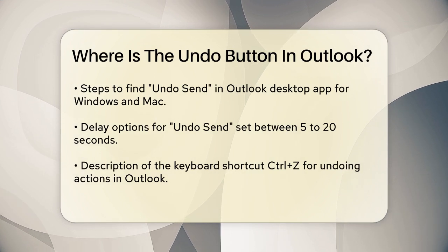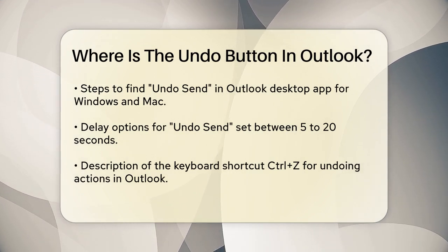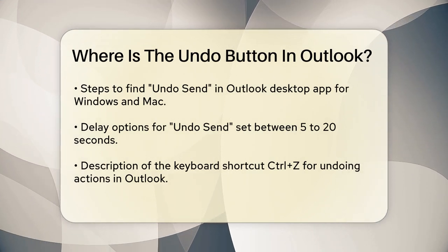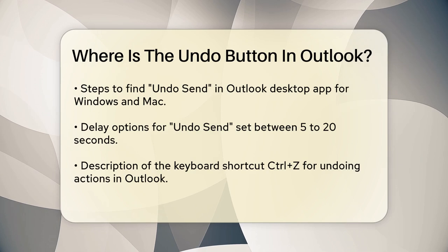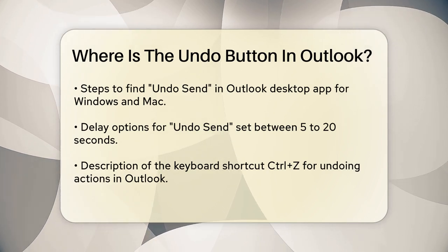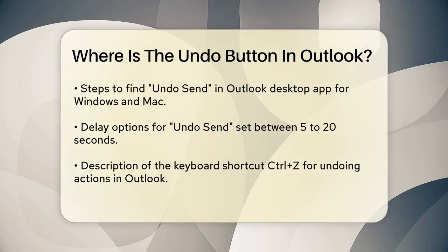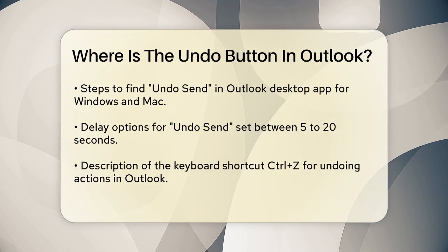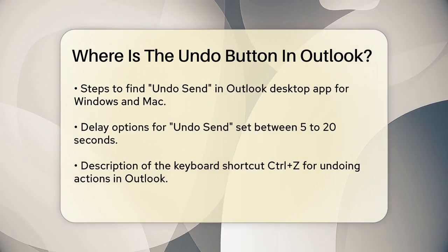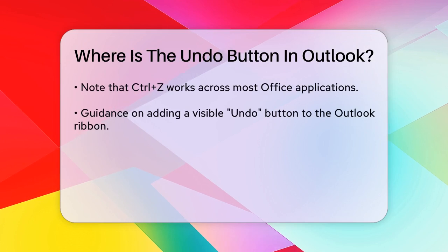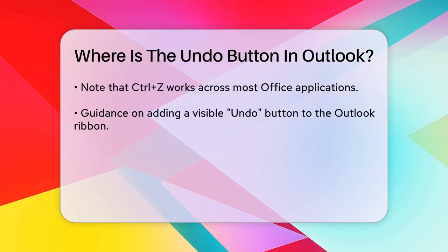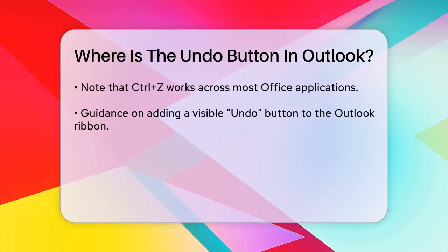For the Outlook desktop app on Windows or Mac, the process is similar. On a Mac, go to Outlook, Preferences, Composing, and set the delay time using the plus or minus buttons. You can choose delays of 5, 10, 15, or 20 seconds. On Windows, the steps are almost identical and you can find the undo send option in the settings menus.